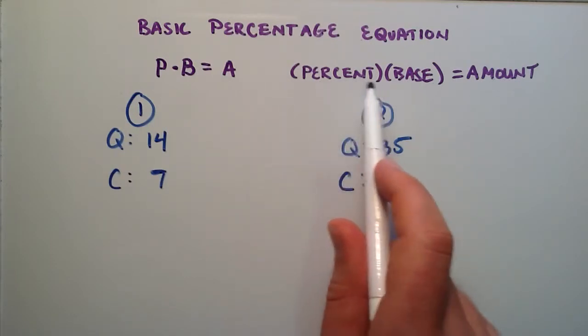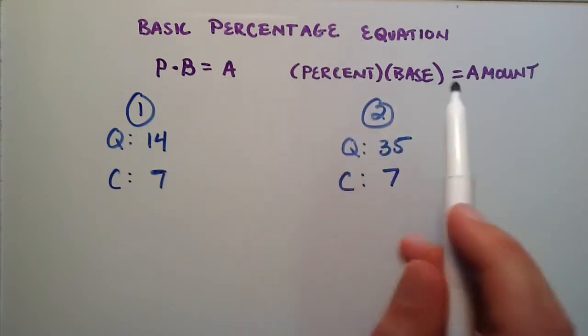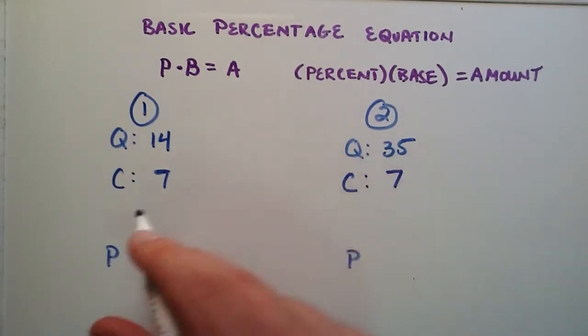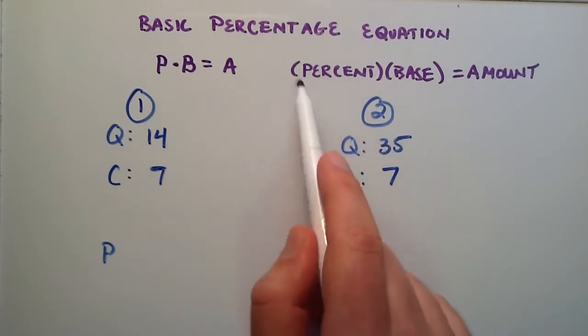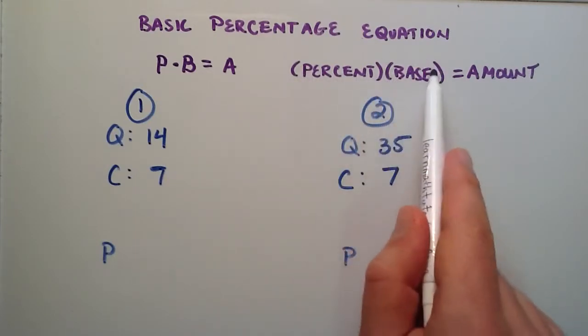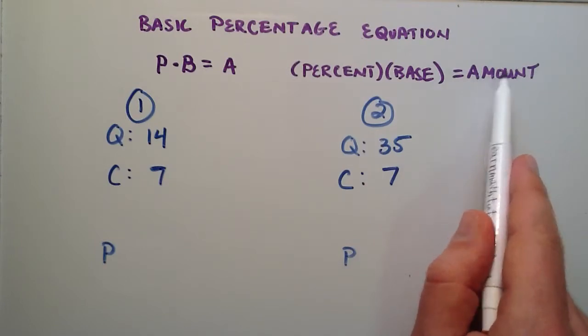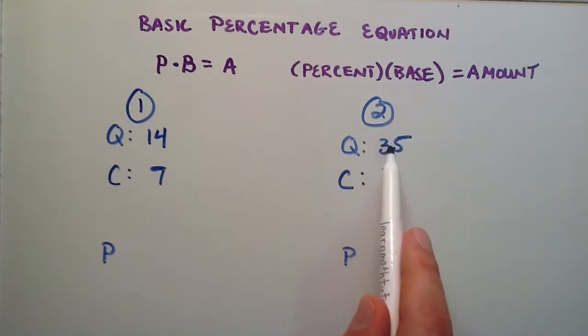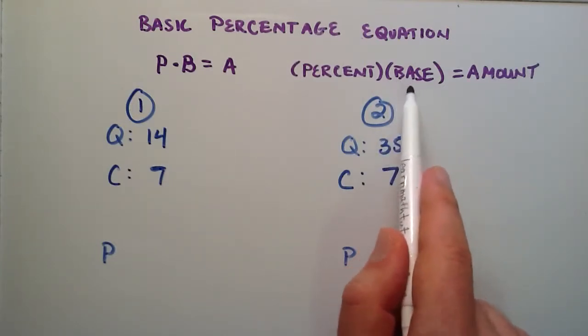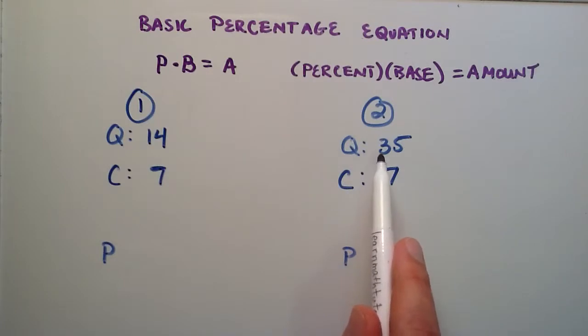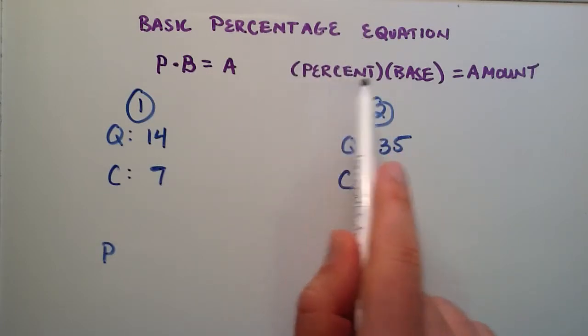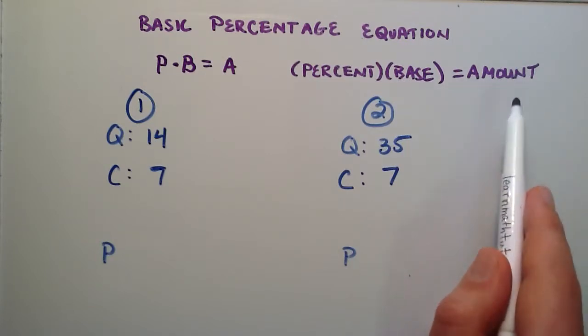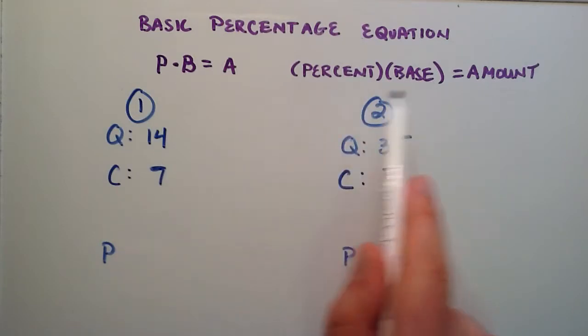In our case we're looking for the percent, so this is going to be our variable. I'm just going to write down the variable here for each of these two cases. The question I asked was what percent of the entire assignment is complete? So the entire assignment is equal to the total number of questions. In our case our base number is the total number of questions in the assignment. The amount is going to be the amount complete.